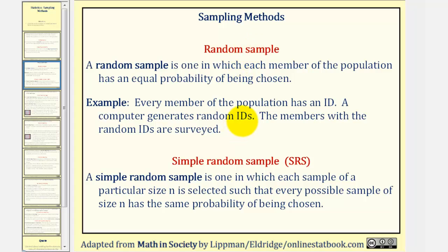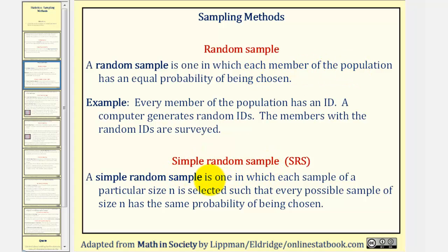Related to random sample is the simple random sample, also known as SRS. A simple random sample is one in which each sample of a particular size N is selected such that every possible sample of size N has the same probability of being chosen. So notice for a random sample, we're selecting individual members of the population, but for a simple random sample, we're selecting a sample size of N.